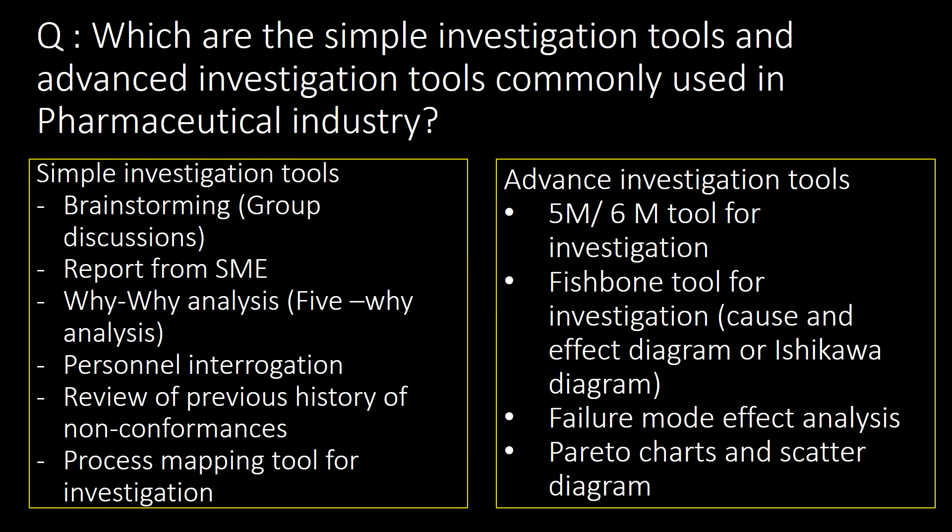Which are the simple and advanced investigation tools commonly used in the pharmaceutical industry? Simple investigation tools include brainstorming, report from SME, 5Y (Why-Why) analysis, personal interrogation, review of previous history of non-conformances, and process mapping. Advanced investigation tools include the 5M or 6M tool, the fishbone tool (commonly known as the Ishikawa or cause-and-effect diagram), failure mode and effect analysis (FMEA), and parallel charts and scatter diagrams — statistical tools that are very rarely used in the pharmaceutical industry.